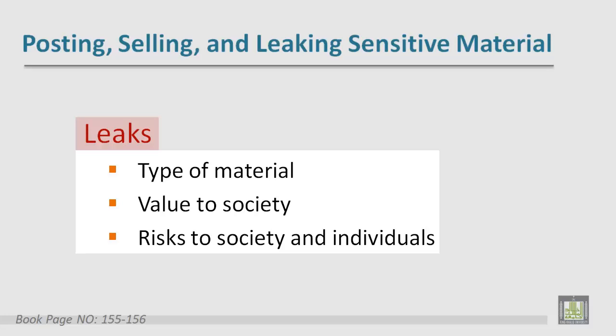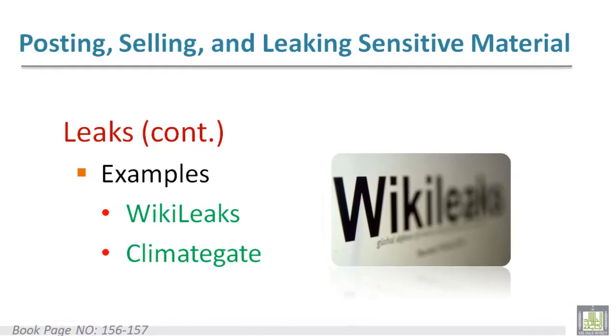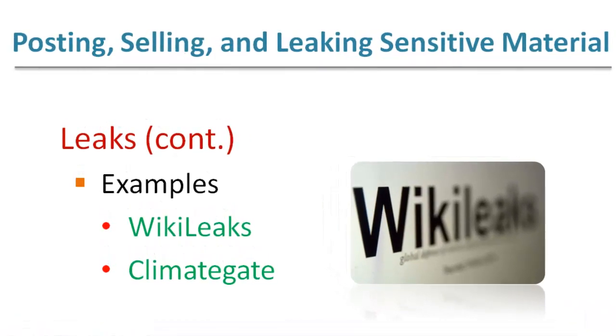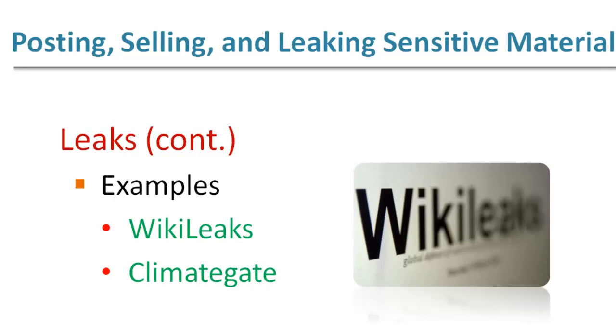This does not mean that leaking is always wrong. It means that the reasons for leaking the material must be strong enough to overcome the ethical arguments against it, and the publisher of the leaked material must handle it responsibly. Documents that include significant evidence of serious wrongdoing are reasonable candidates for leaks. The most common examples are WikiLeaks and Climategate.